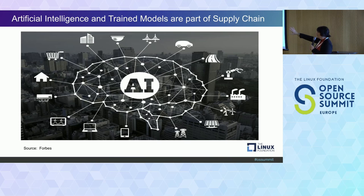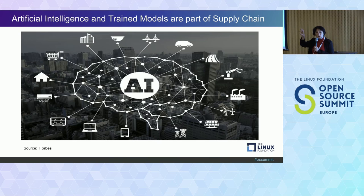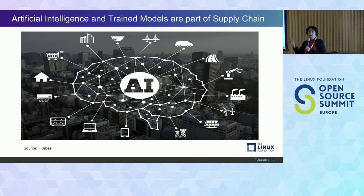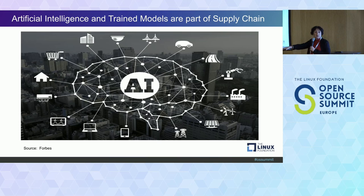The world is changing — AI is pretty mainstream now. It's coming online with a lot of applications these days and it's fully in your supply chain.